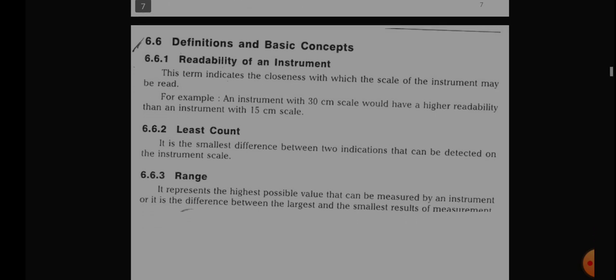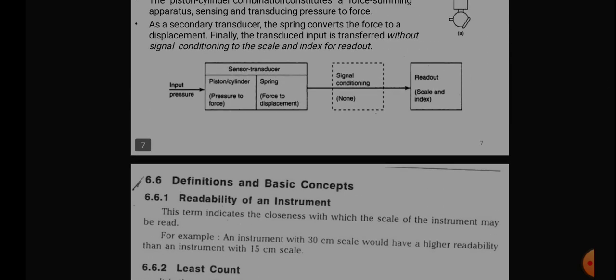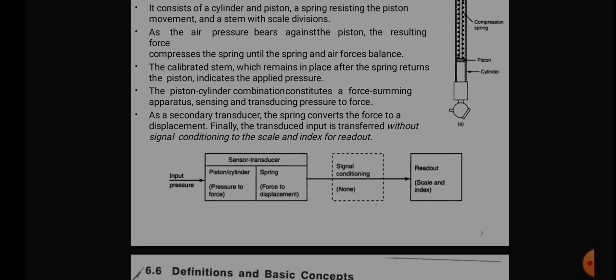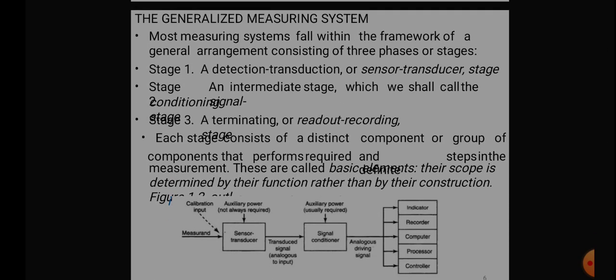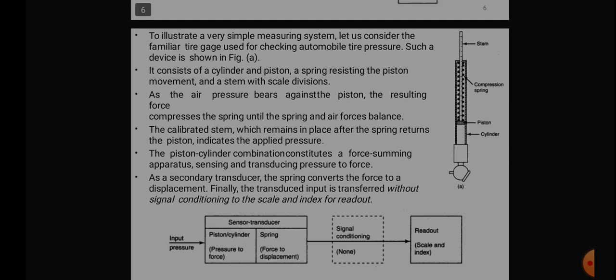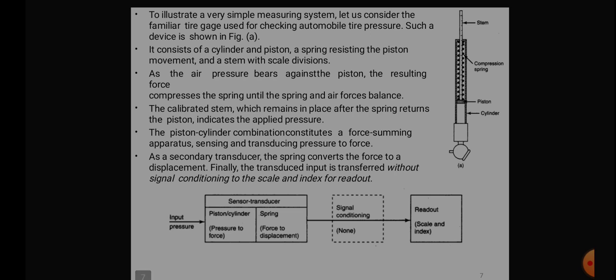And there are some definitions in this module. These definitions we will see one by one in the coming class. But before this, you must understand what is this generalized measurement system. The generalized measurement system will be carried in three stages. Stage one will be the detection, stage two is the signal conditioning, stage three is the terminating stage. And you have to explain this with a simple example, like your automobile tire pressure checking instrument, or any other example you can give. So this is about the first half of your module. Please go through this. I will share the PPT as well as the notes. With this, you can read out any doubts. We'll discuss later in the class. Thank you.